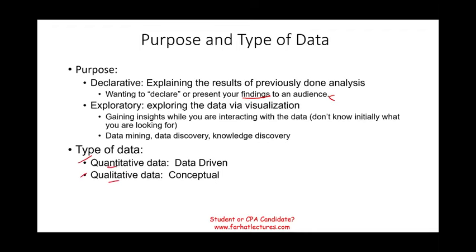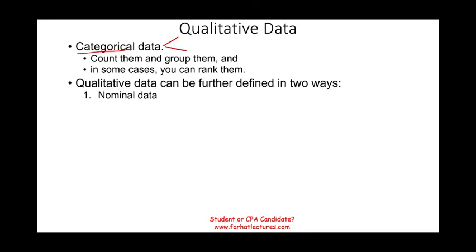Starting with qualitative data, those data are also called categorical data. You can count them, you can group them, and in some cases you can rank them. Categorical data can be broken down into two categories. One is nominal data. This is the simplest type of data. We're talking about hair color, gender, ethnic groups. You cannot rank or average them. For example, you cannot say a male is better than female by gender, or the black hair color is better than the blonde, or you cannot find the average hair color.